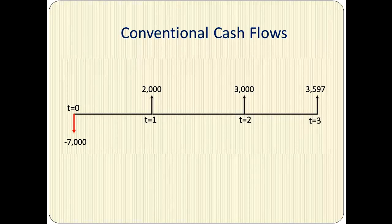Here we have a set of cash flows. The initial cash flow, which is the outflow at T equals zero, is $7,000. Then we have three inflows, which are positive cash flows of $2,000, $3,000, and $3,597. This is a conventional set of cash flows because there is only one sign change from the initial cash flow of $7,000 to the subsequent cash flows.